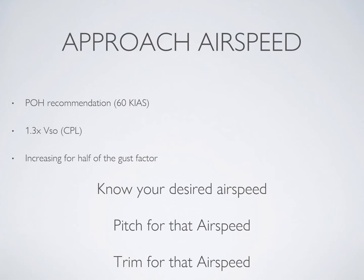The recommended approach airspeed will also vary depending on whether you have flaps extended or not. For your commercial flight test you will be asked: in the absence of the POH or manufacturer's recommended approach speed, what airspeed should be used? The answer is a speed equal to 1.3 times the flaps-out stall speed. A good rule of thumb in gusty conditions is to increase your airspeed by half the gust factor — so if wind is 10 gusting 20, add 5 knots — since you don't want to risk losing lift if you suddenly lose a strong gust.